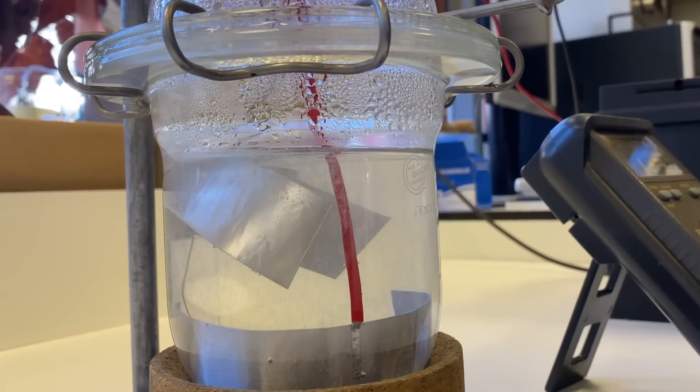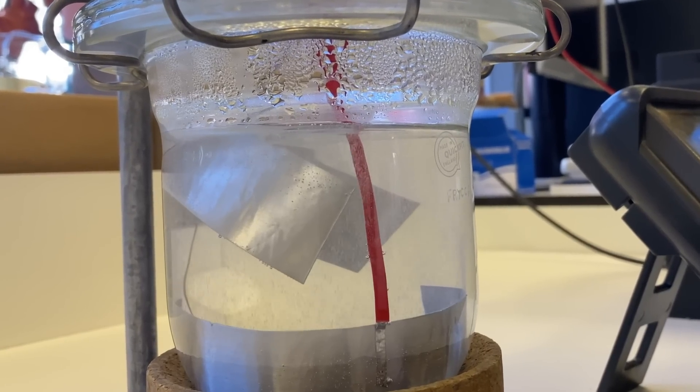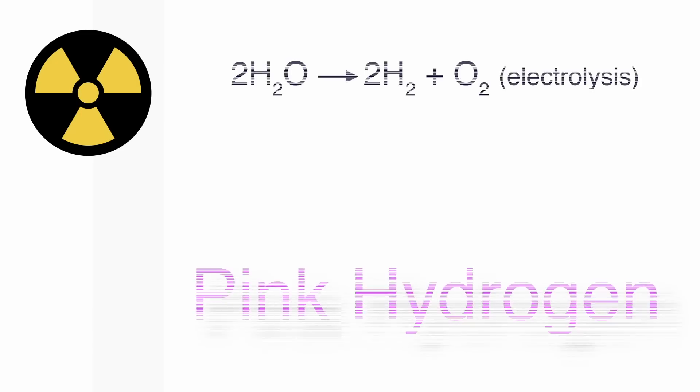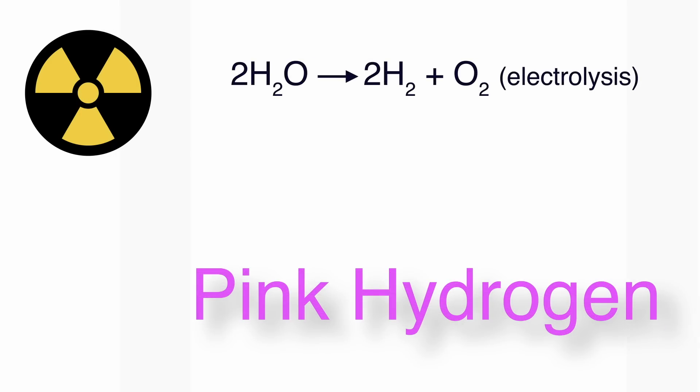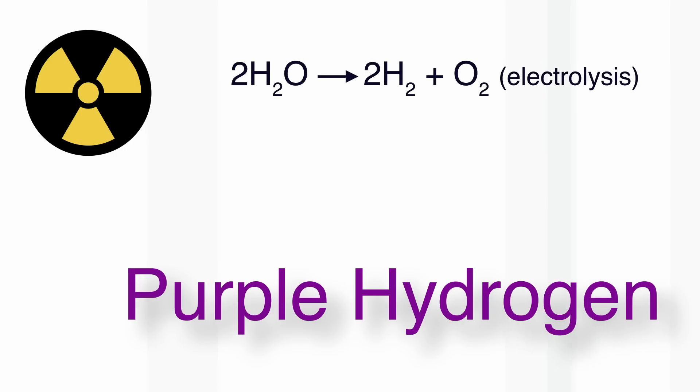Hydrogen that is made by passing electricity from a nuclear power station is called pink hydrogen, or some people call it purple hydrogen.